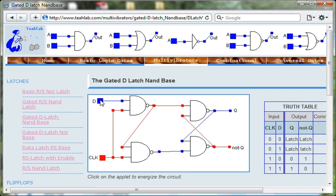When D is equal to 1, Q is equal to 1. And when D is equal to 0, Q is equal to 0.